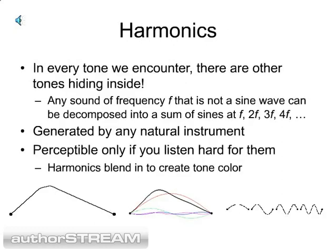The answer to the question is harmonics. It turns out that in every tone we encounter, there are other tones hiding inside. The reason for this is that any sound of frequency f that is not a pure sine wave can be decomposed into a sum of sine waves at f, 2f, 3f, and so on. Harmonics are generated naturally by any natural instrument. For instance, in the case of a string, its motion is the sum of many component motions, each of which generates a harmonic component. Harmonics are perceptible only if you listen hard for them, because usually they blend in with the fundamental to create tone color.